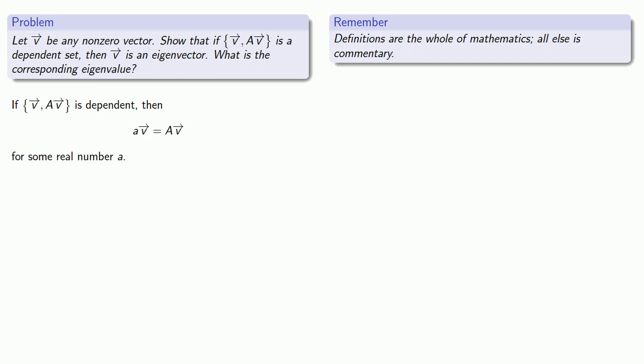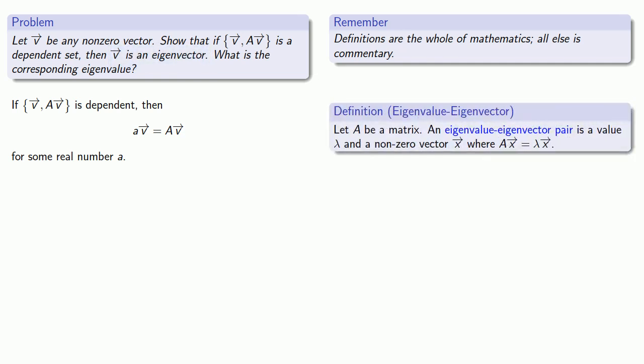Again, definitions are the whole of mathematics. All else is commentary. This problem also asks about eigenvectors, so let's pull in that definition. And we see that this is actually our definition of what makes up an eigenvector-eigenvalue pair. So v is an eigenvector with eigenvalue λ, whatever that scalar multiple is.